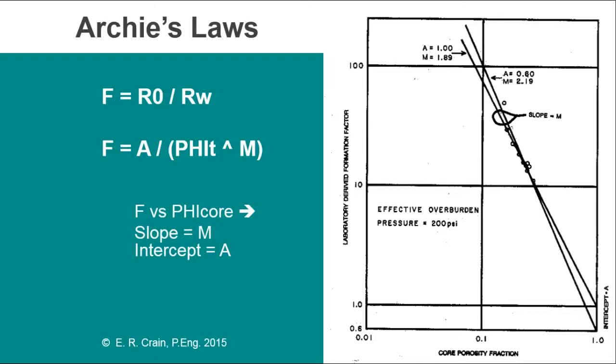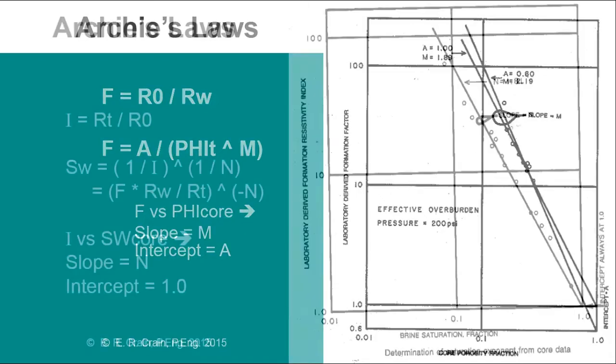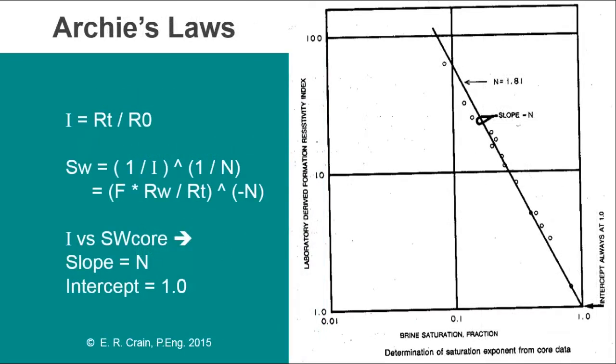In the early days there were no porosity logs, so this formation factor concept was used to calculate porosity from resistivity logs. The R0 term came from the shallow resistivity log and Rw was found or known, and we would end up calculating porosity from our resistivity logs.